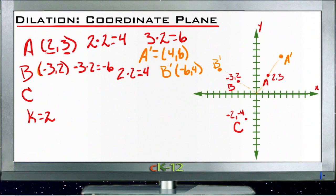And then finally for C, C is at negative 2, negative 4. So C' will be at negative 4, negative 8. So it's down here somewhere. Same direction from the origin, just twice as far.